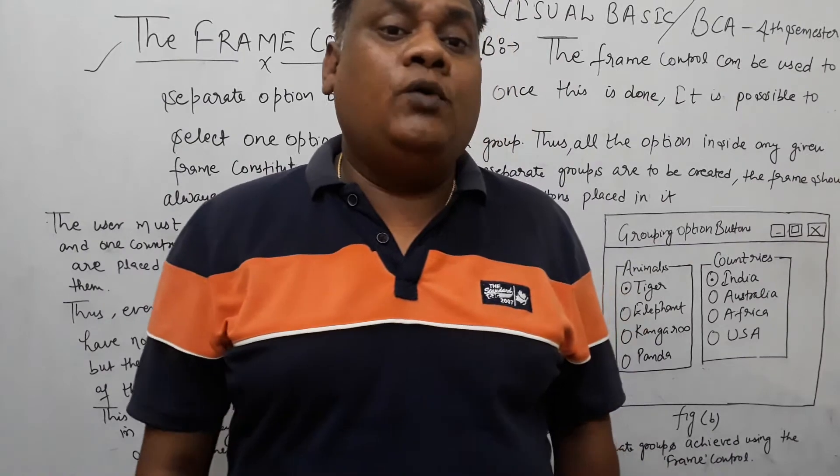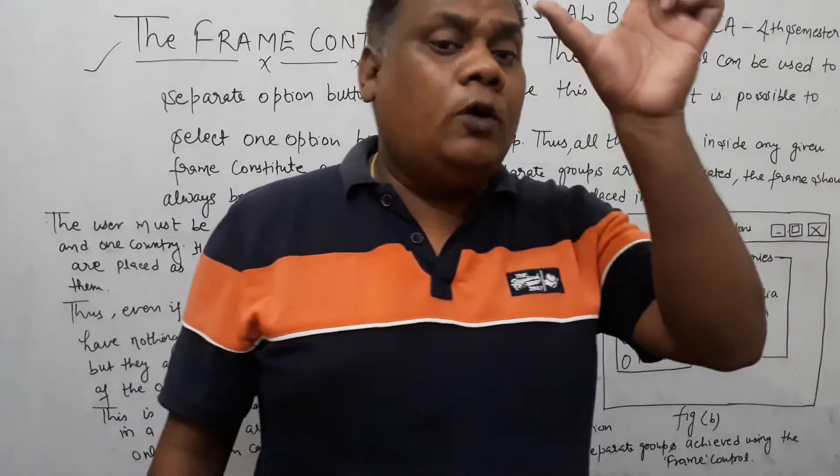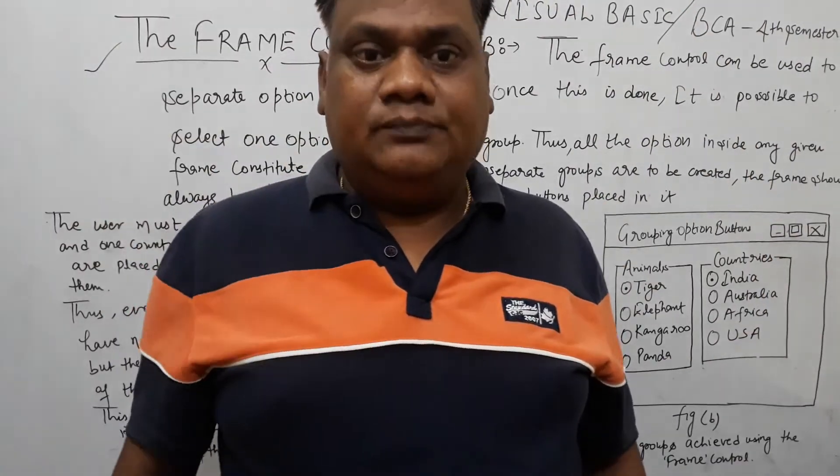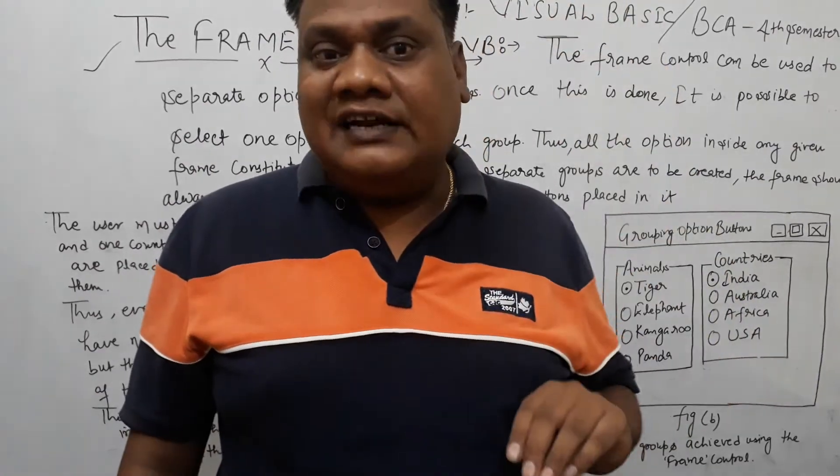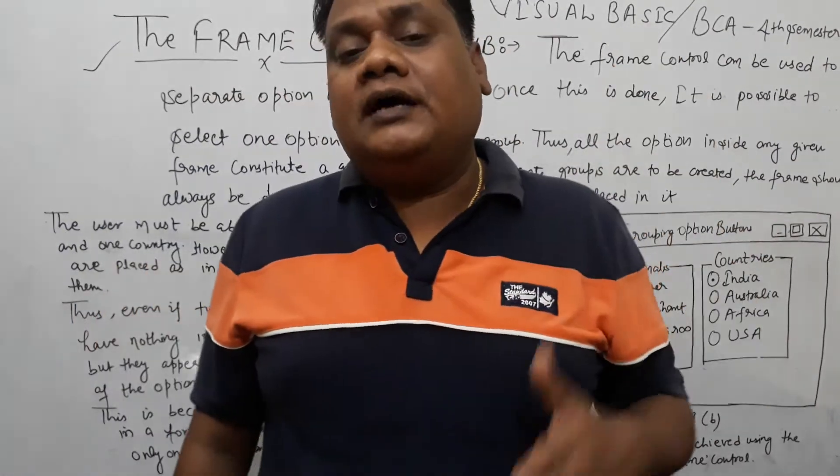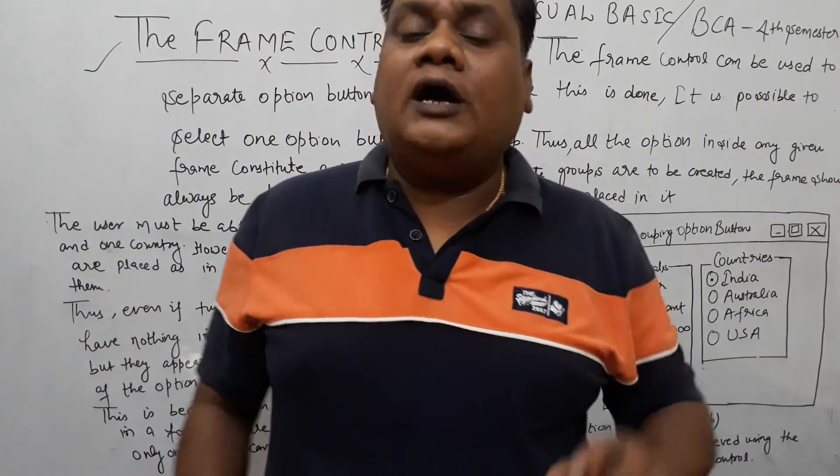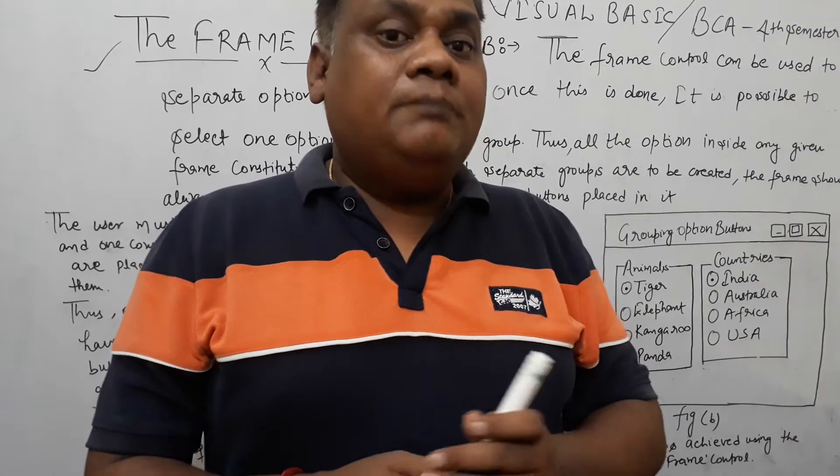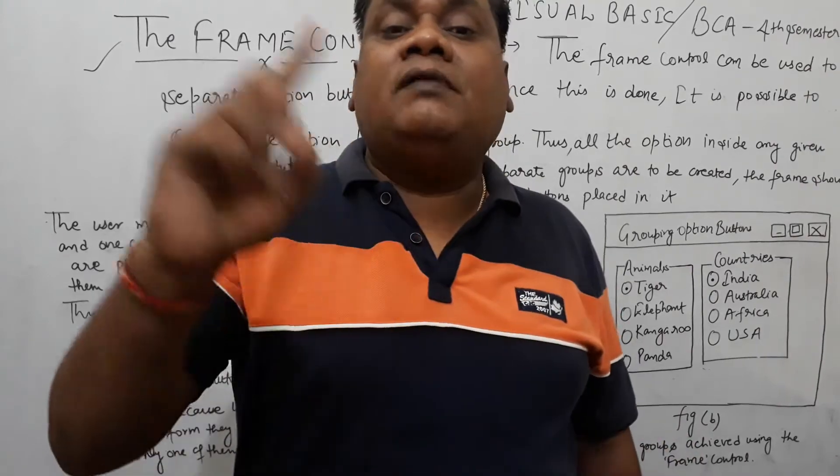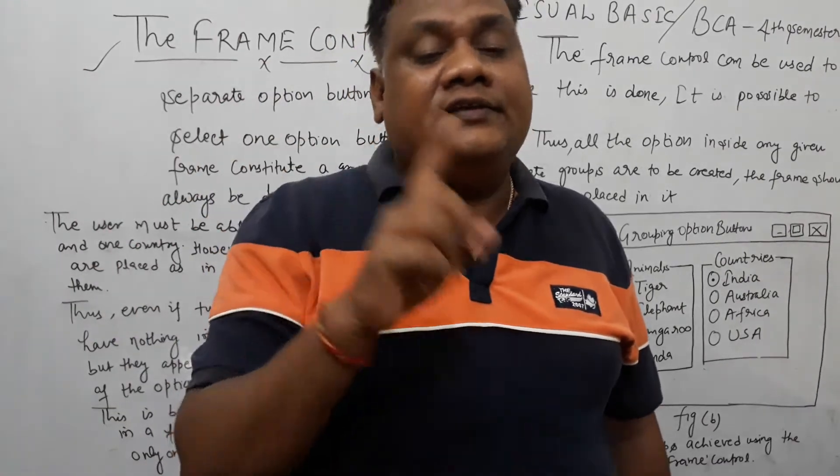The frame is one of the controls that you can use to group option buttons. For example, you have one group of animals and one group of countries. If you have 4 animals selected in the option button: tiger, panda, kangaroo and elephant, and then you have 4 options with the names of India, Australia, Africa and USA. You can click on India and then you can click on tiger.